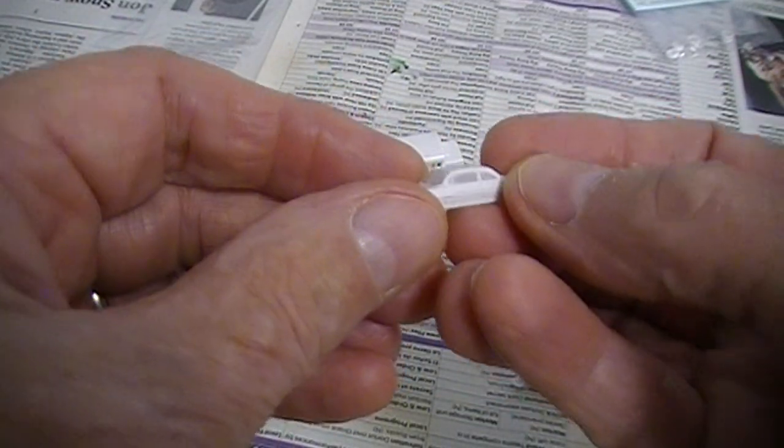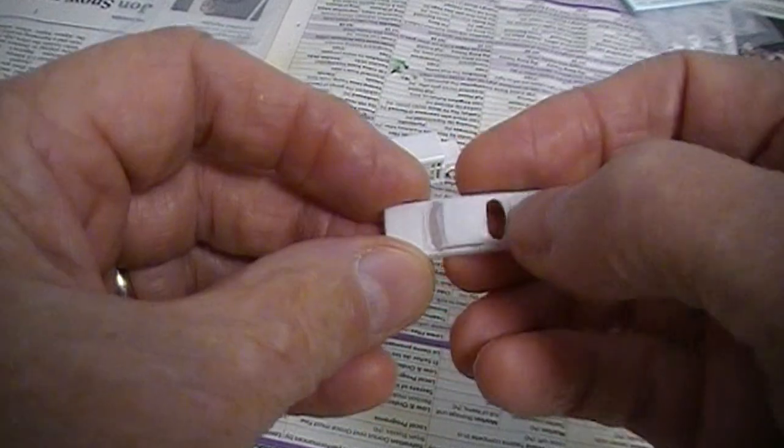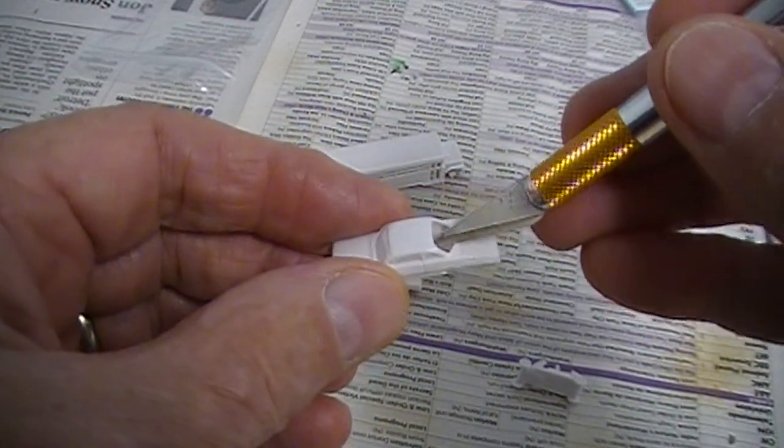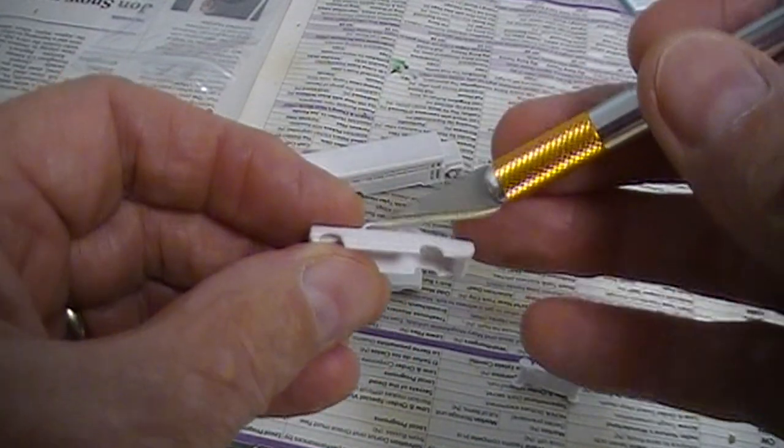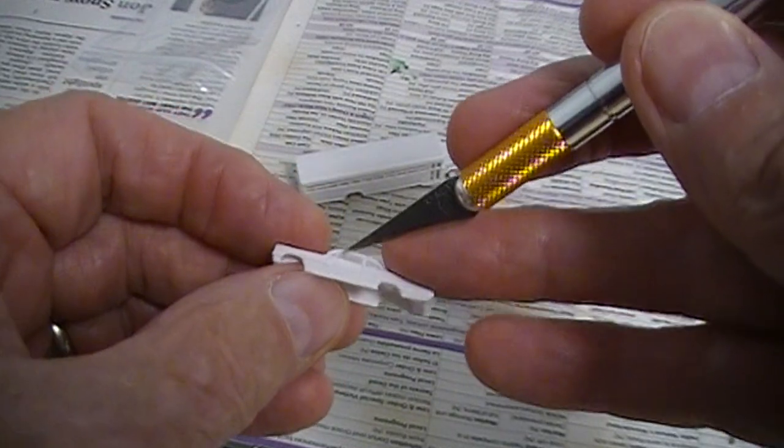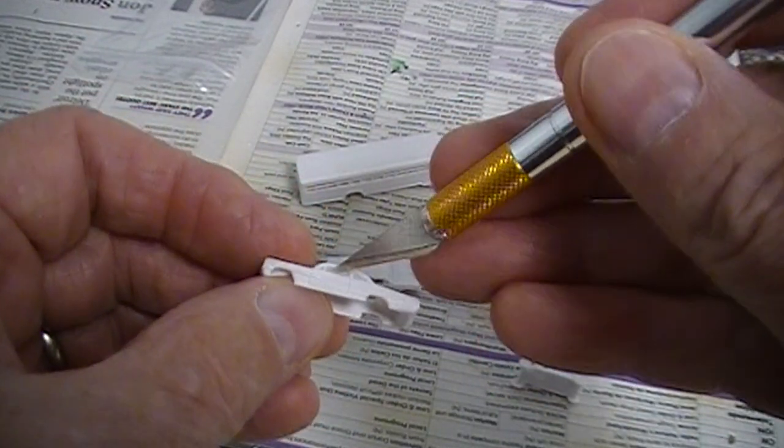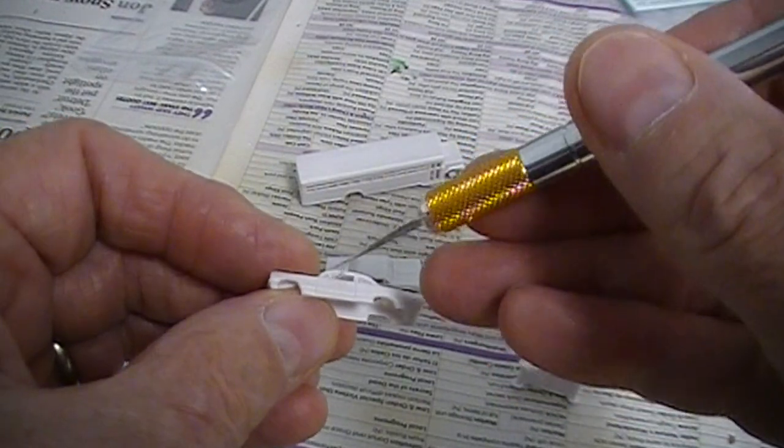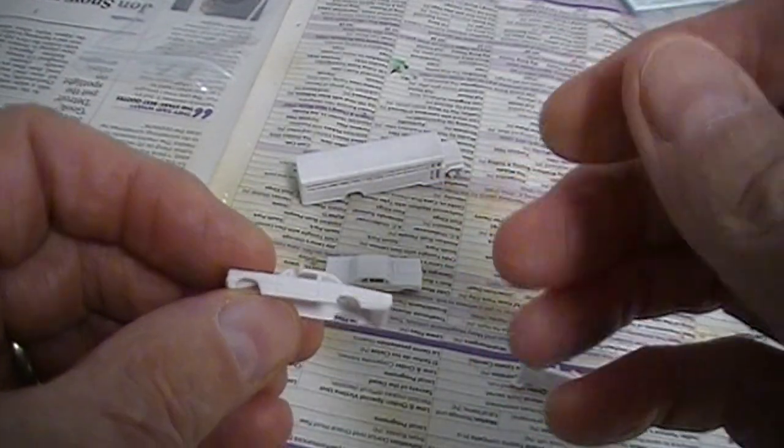The one thing that you may have to do is take an exacto knife and trim out where the window was. There's a very thin film in here. Of course being resin it's going to take a little bit to take that piece out. But they will come up very easy.